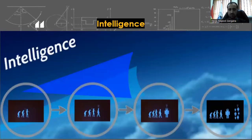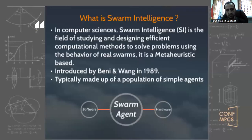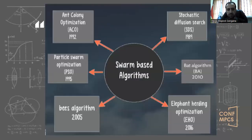The intelligence itself starts from the first human, then came to the intelligent human of today. After that, the intelligent human created the robot, and now the last level is a group of robots. Swarm intelligence in computer science is the field of studying and designing efficient computational methods to solve problems using the behavior of real swarms. We have many algorithms, and I will show you some of them just to get the idea — there are many swarm algorithms.